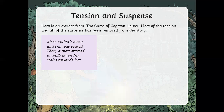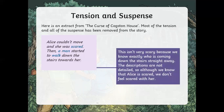Now, this is a part of an extract from The Curse of Cogston House. Most of the tension has been removed. This little extract here has no tension or suspense whatsoever. It just says: Alice couldn't move and she was scared. Then a man started to walk down the stairs to water. This isn't very scary because we know exactly who's coming down the stairs.